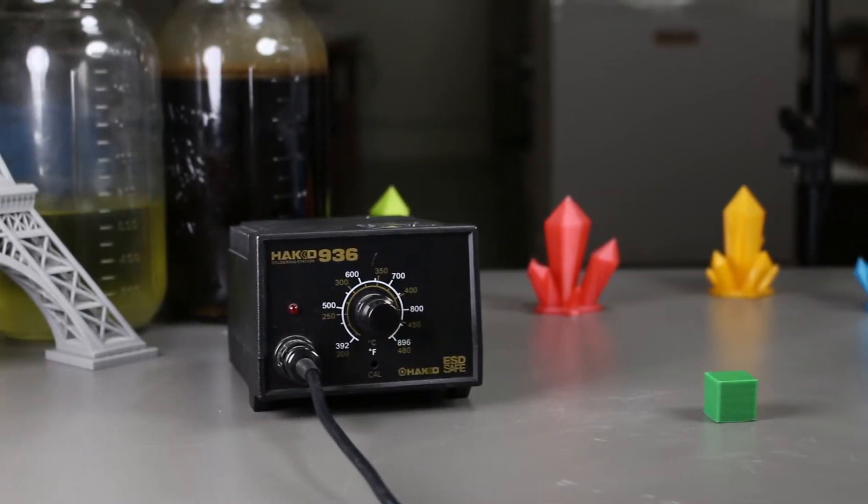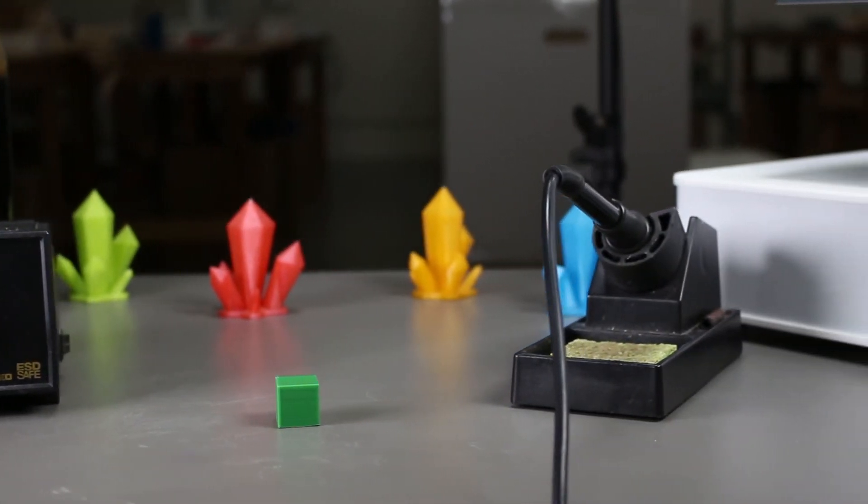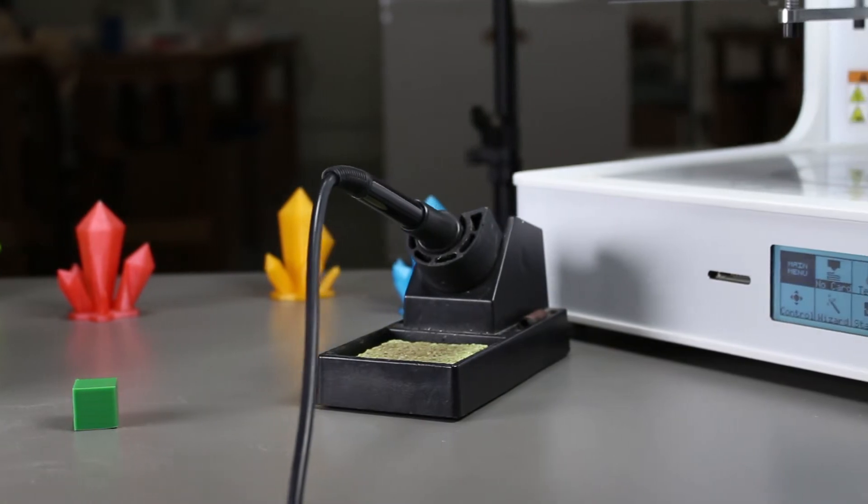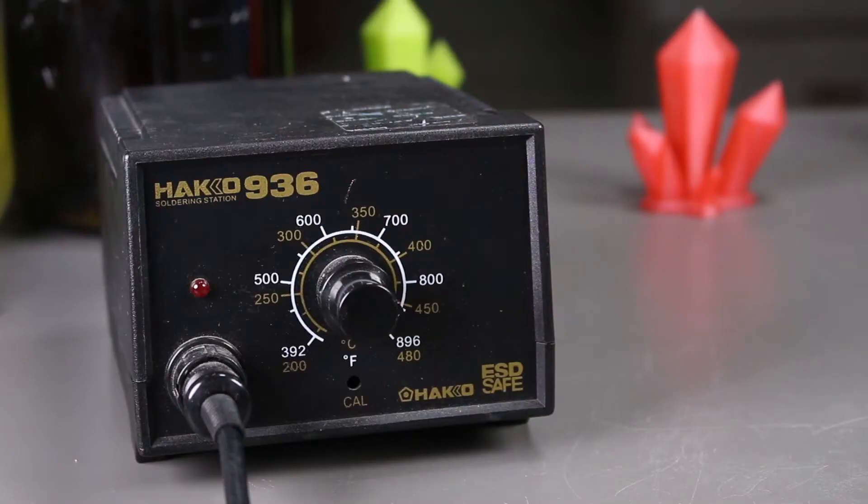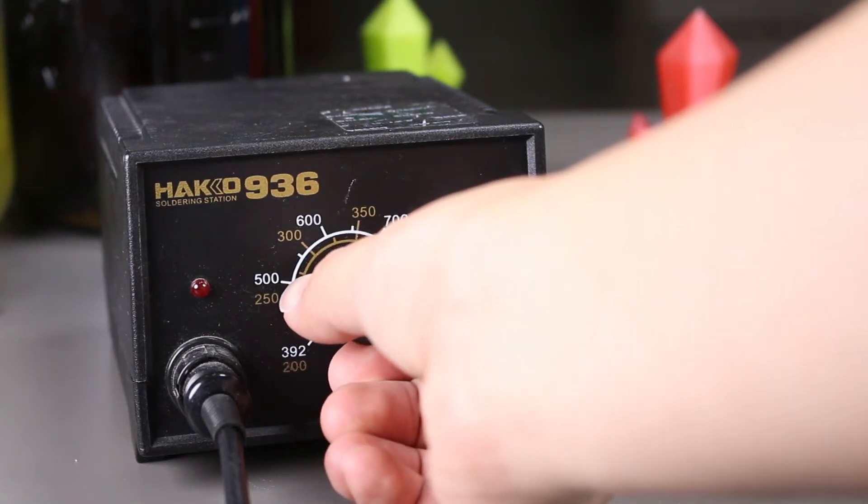We tested the soldering iron last time at 450 degrees celsius and it was just a bit too hot. We didn't have enough control and it just melted the PLA too fast leaving these streaks. This time, I will turn it down to 350 degrees celsius and then try it out.